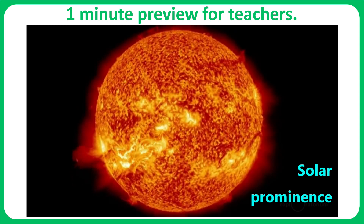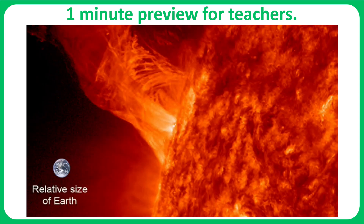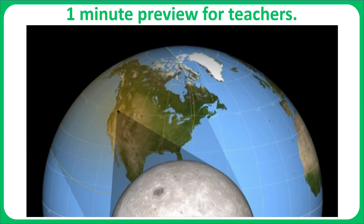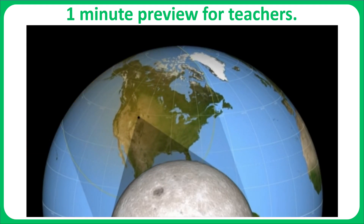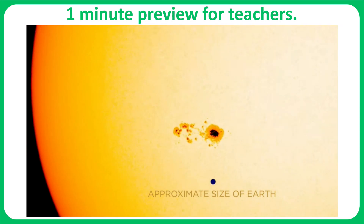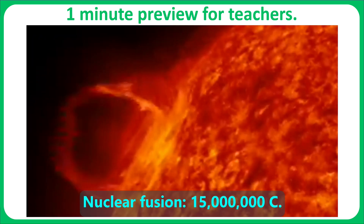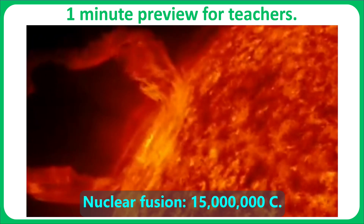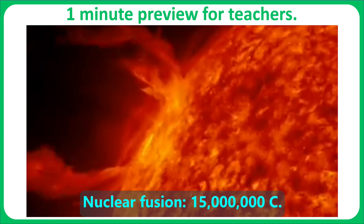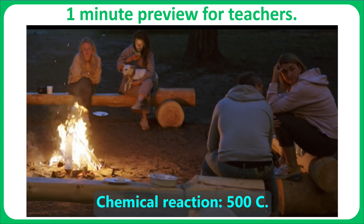Some of the video's content includes showing students that the Sun is a star and its approximate size compared with the Earth. We show a solar eclipse. We introduce the Sun's activity such as sunspots and their impacts on the Earth. We contrast how the Sun makes heat and light energy using nuclear fusion compared to how a campfire makes heat and light.